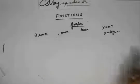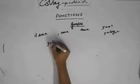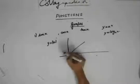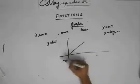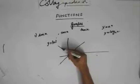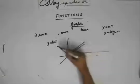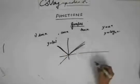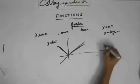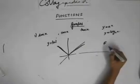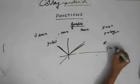Now, the graph of the absolute value function: y equals mod x. When x is positive, y equals x. When x is negative, y equals minus x. So the graph is V-shaped. The domain is the set of real numbers and the range is always positive, so it's 0 to infinity.